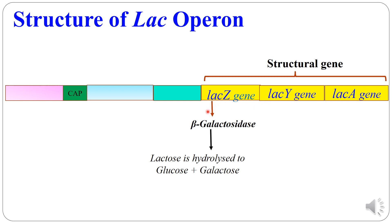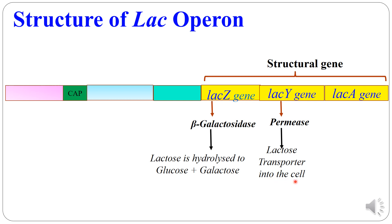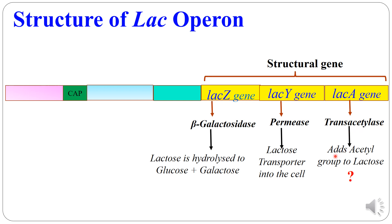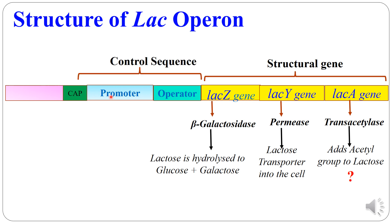The lacZ gene forms the enzyme beta-galactosidase, which hydrolyzes lactose to glucose plus galactose. The lacY gene makes the permease enzyme, which is a lactose transporter that allows the entry of lactose into the bacterial cell. The lacA gene forms transacetylase, which adds an acetyl group to lactose, though the significance of this acetylation is still not clear. The structural gene lies just behind the operator, and just ahead of the operator lies the promoter, followed by the CAP site.